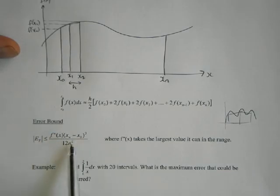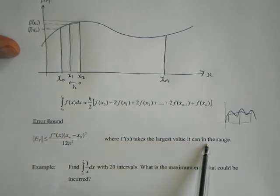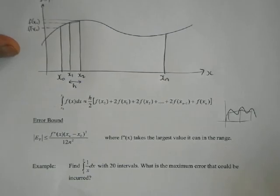To work out the error bound, we need to know what the second derivative of the function is, what the n value is, and what the two limits are. The key thing here is that the second derivative we're going to put into the formula is the largest value it can take in the range.